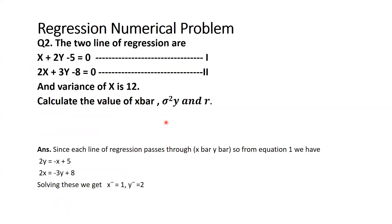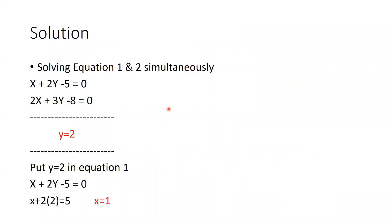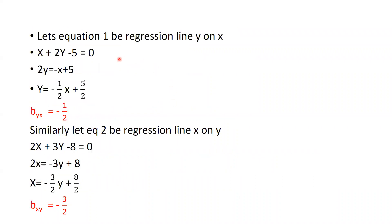Now the next step — I want to calculate the value of r and the value of sigma squared. Let me take equation 1 and treat it as regression line y on x. So x plus 2y minus 5 equals 0 gives us 2y equal to minus x plus 5, and therefore y equal to minus 1/2 x plus 5/2. So byx equal to minus 1/2. This is my regression coefficient.